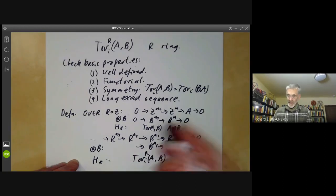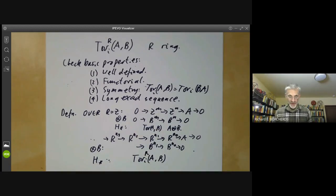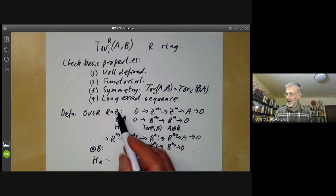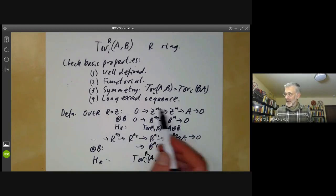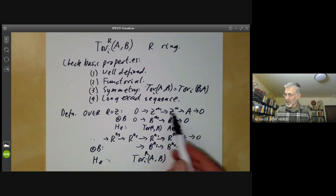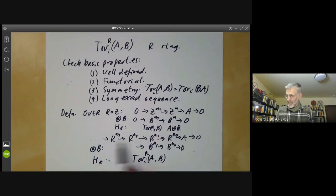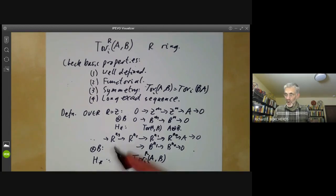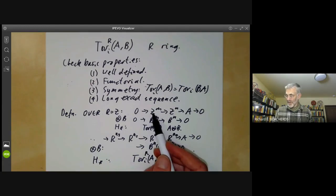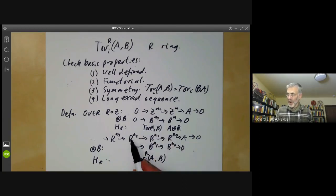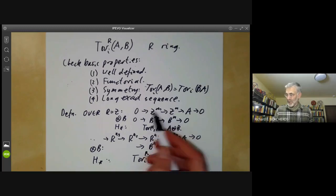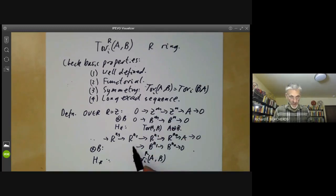As we did in the previous lecture. The main difference between working over an arbitrary ring and working over Z is that instead of just having a presentation of A by two modules, you now have an infinitely long resolution. All the theorems we proved in the second lecture by working over the integers, we're now going to prove over arbitrary rings, just by doing what we did in lecture two, only more so.